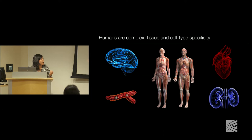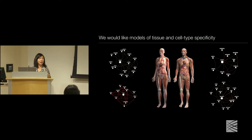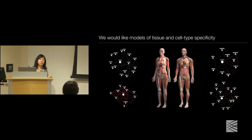One of the things that underpins human complexity is tissue and cell type specificity. These tissues perform different, often very specialized functions in the body and are often associated with different diseases. We would like a computational tissue and cell type level genome interaction model — a network systems biology model of how genes relate to each other within each tissue.